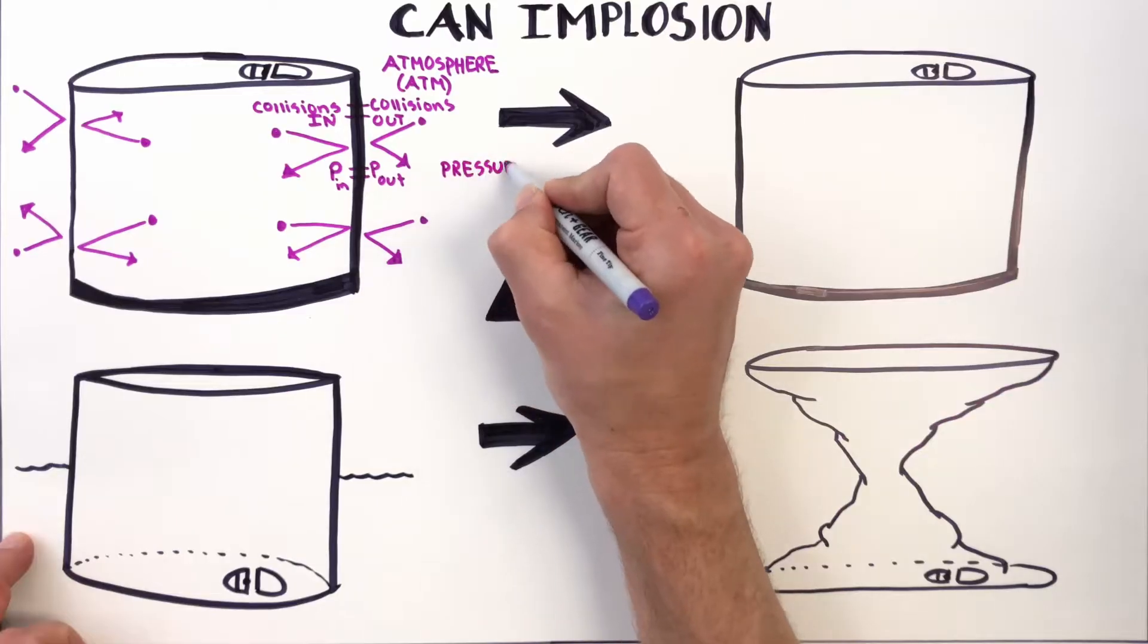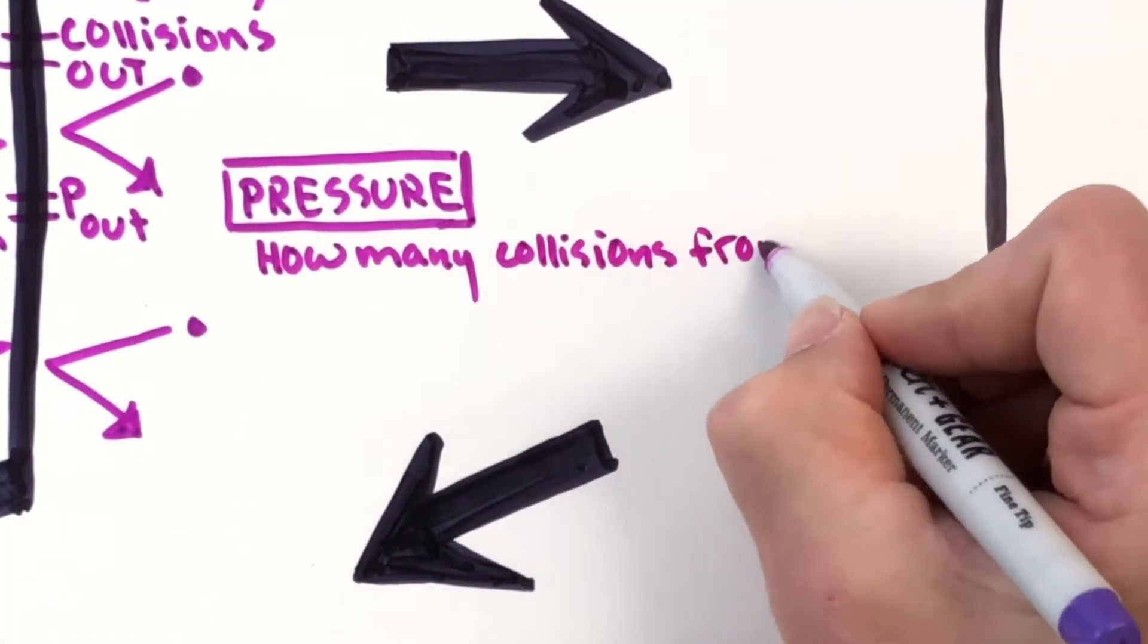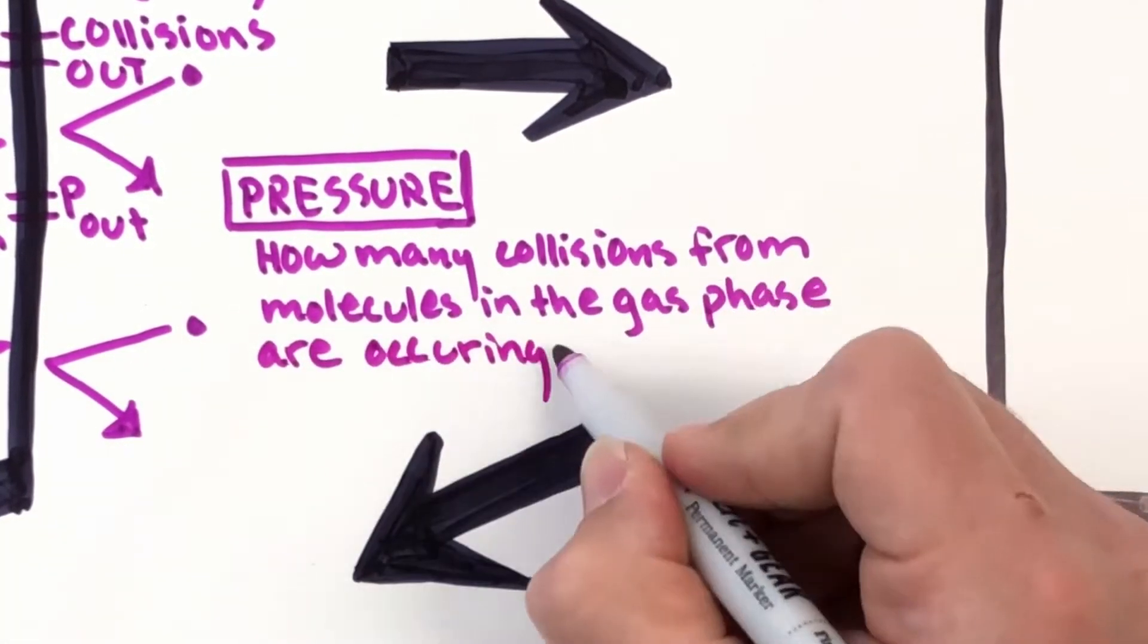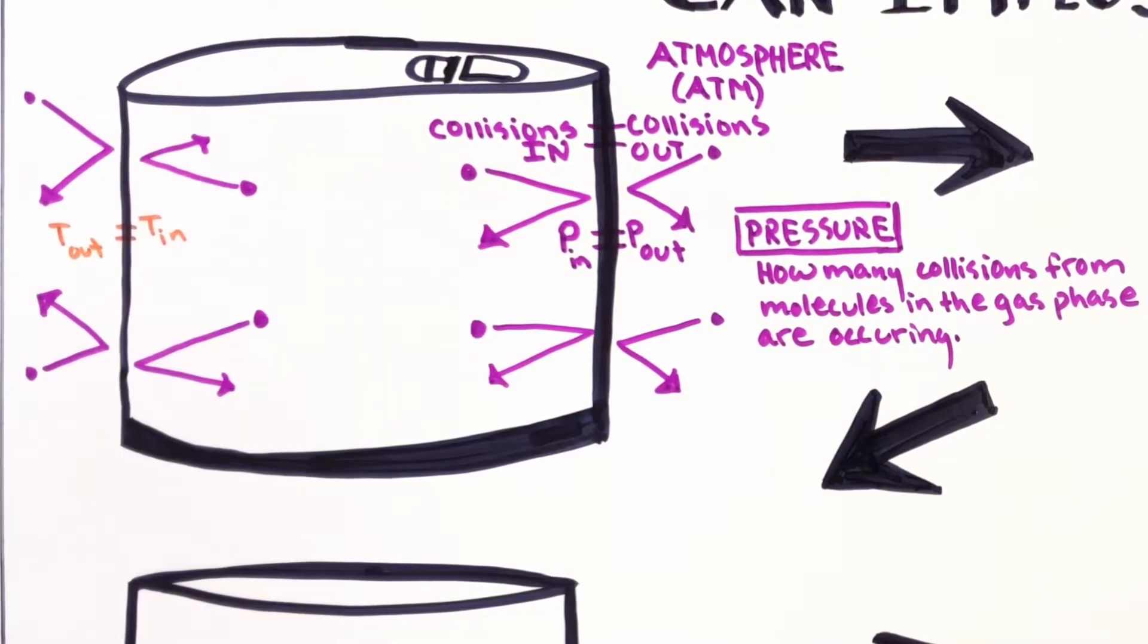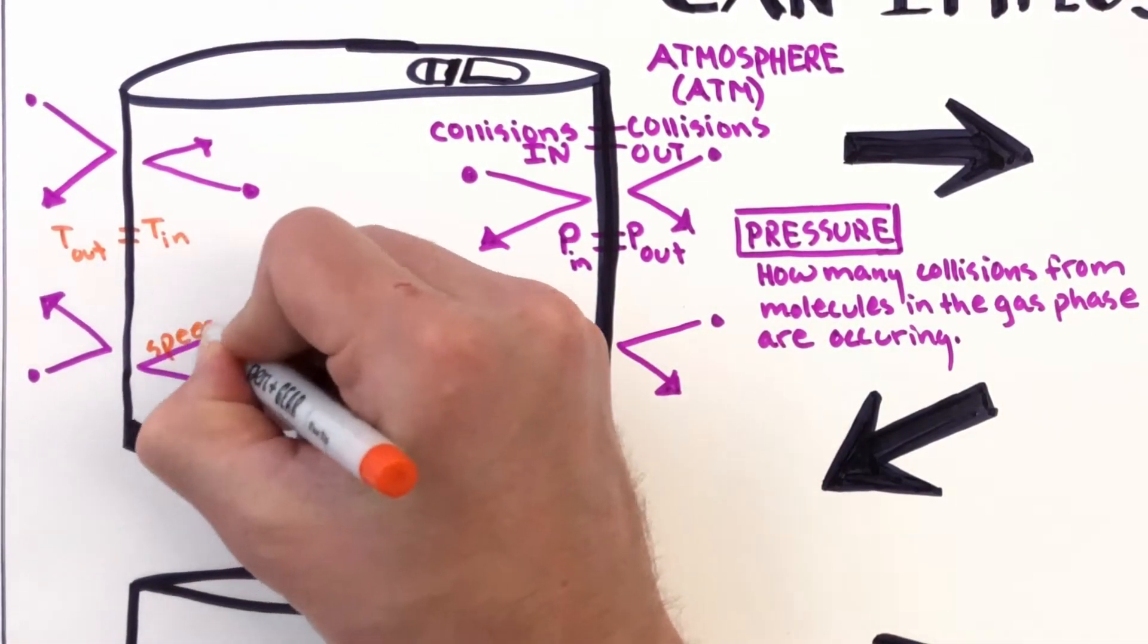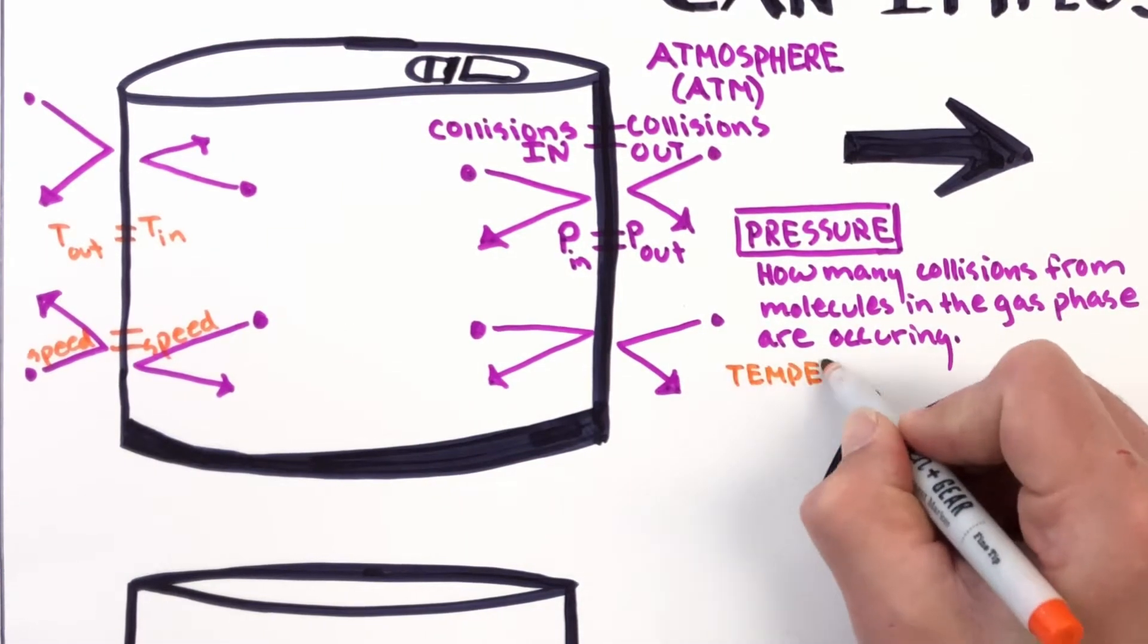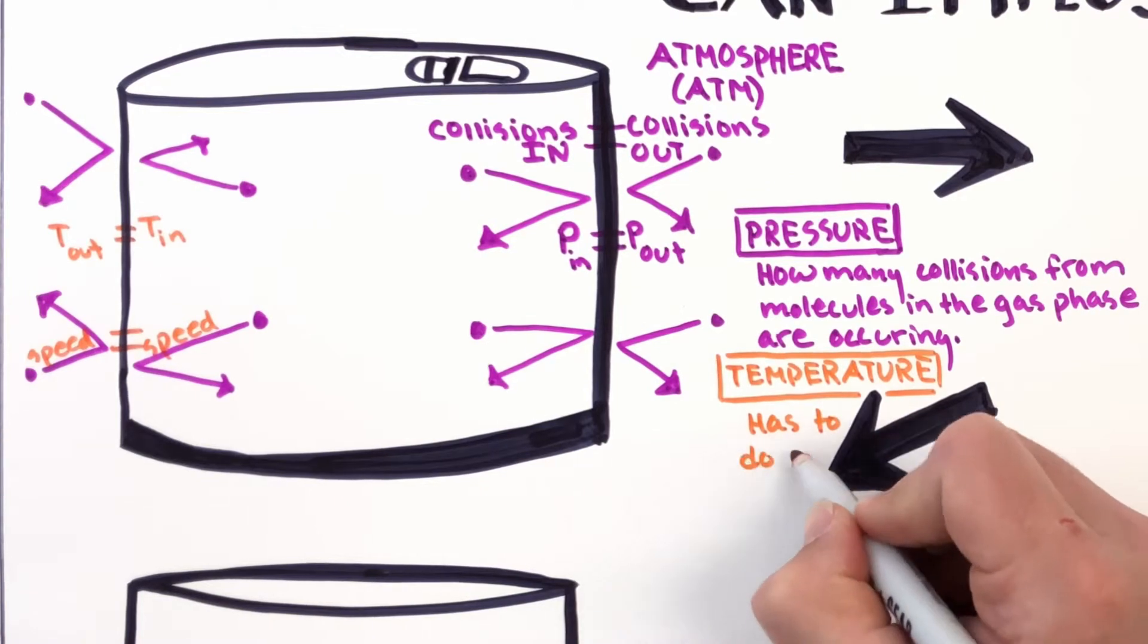So when we think about pressure, pressure's all about how many collisions from molecules in the gas phase are occurring in our can here. And if we put a thermometer in the can, the temperature inside the can is the same as the temperature outside. And what's that mean? The speed of the molecules inside the can is the same. So temperature is all about speed. Temperature has to do with gas molecule speed.